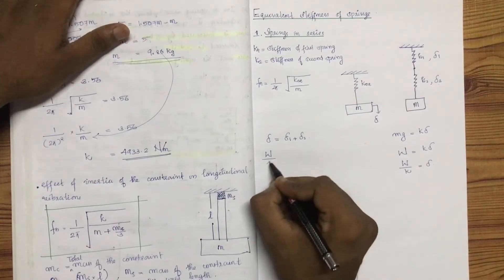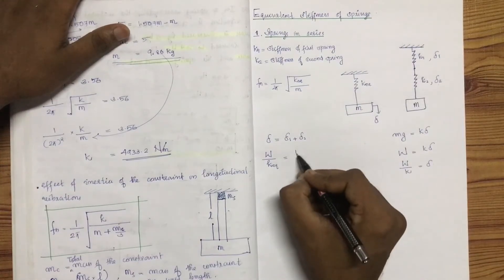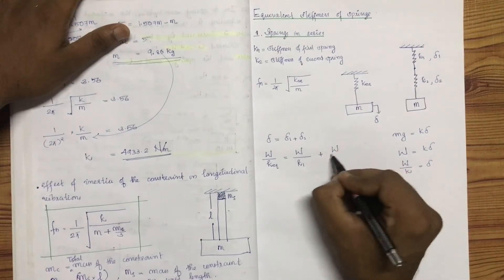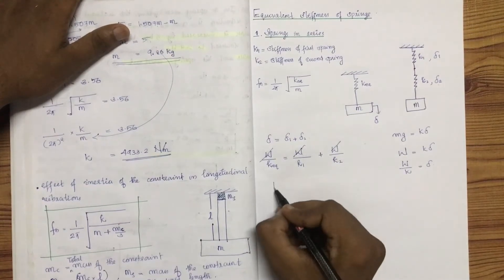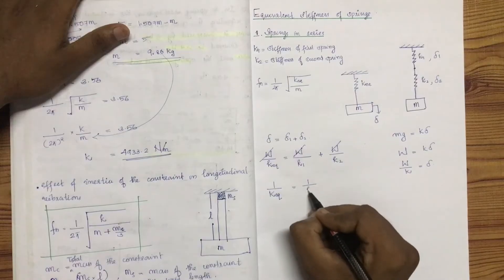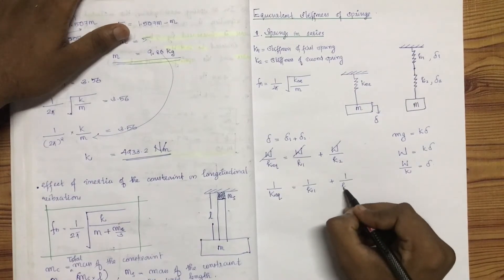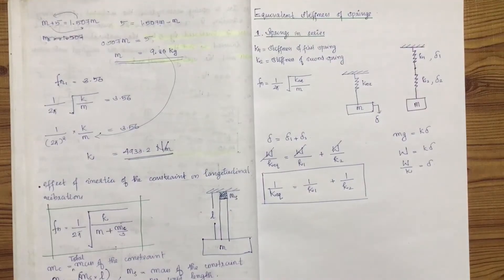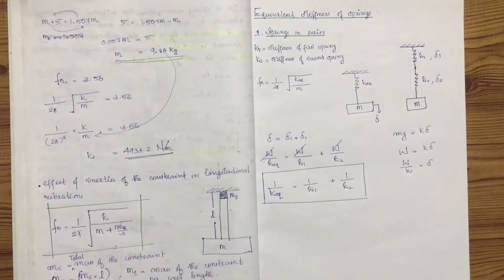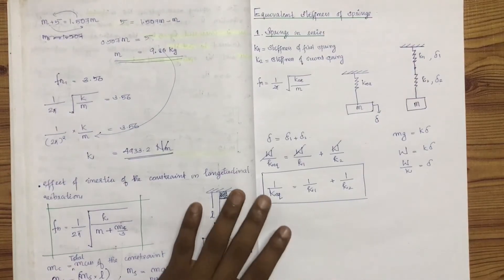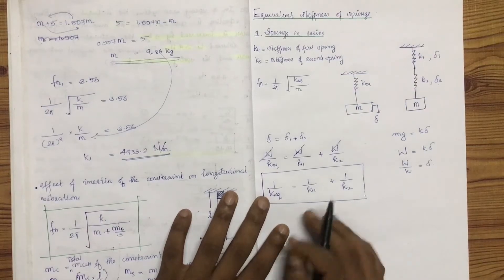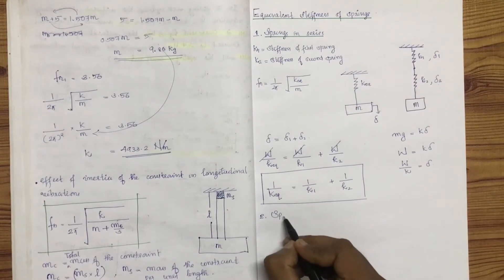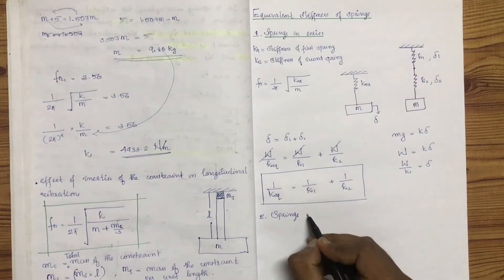We call delta: W by K equivalent equals W by K1 plus W by K2. Dividing through by W gives 1 by K equals 1 by K1 plus 1 by K2. This is the equivalent stiffness formula for springs in series.